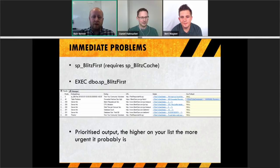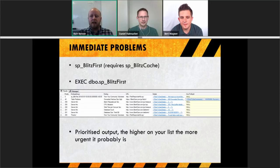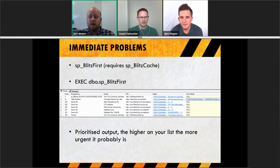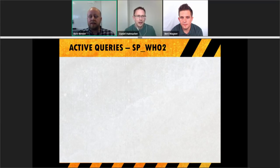The higher on the list an issue appears, the more important it is. It'll tell you things like high CPU, running out of memory — different flags depending on the symptoms. When you're looking at what's running right now, you have two options. I'll tell you the first one and why not to use it, then why to use the second one.